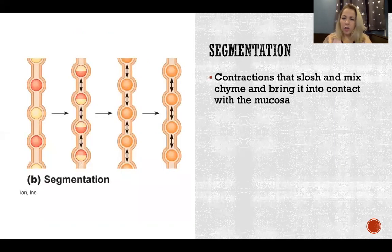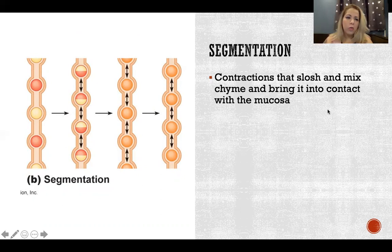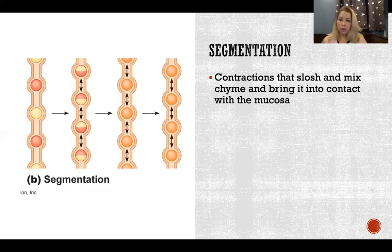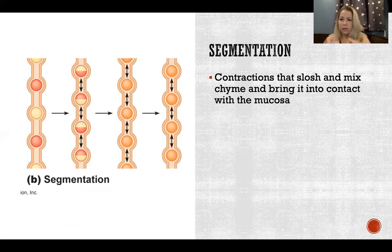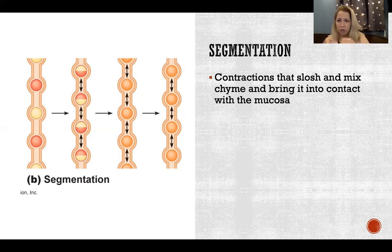Segmentation involves contractions in the wall of the small intestine, where the purpose is to slosh the contents around and mix the chyme with different digestive enzymes and secretions from different organs in the digestive tract. We're mixing and sloshing so that everything is fully mixed, and as we do that, the chyme comes into contact with the walls of the small intestine, increasing contact between the contents and the mucosa for the purpose of absorption.